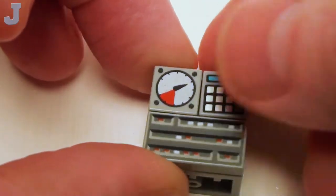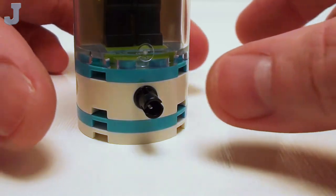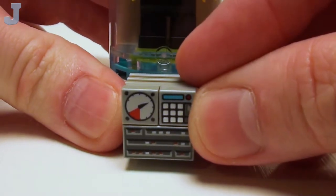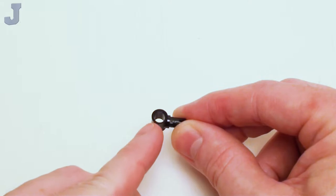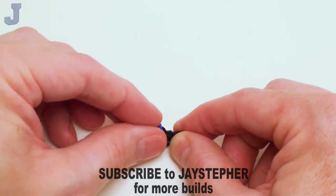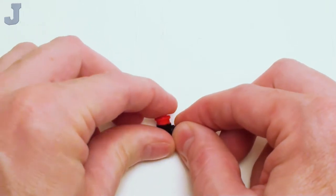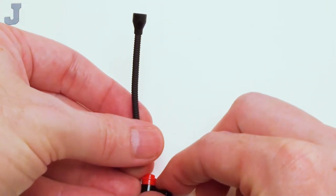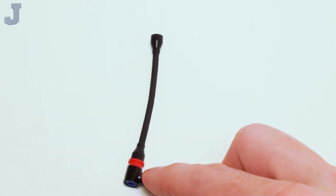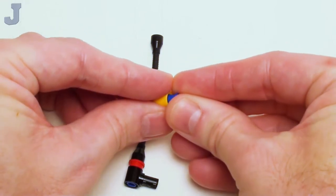For the fluid tube, start with a 1 by 1 technic beam with friction pin. I'm going to set a technic pin with stud in that end, then I'm going to place a stud on top of that. Now I'm going to set a hose with two tubes and place that on one side.